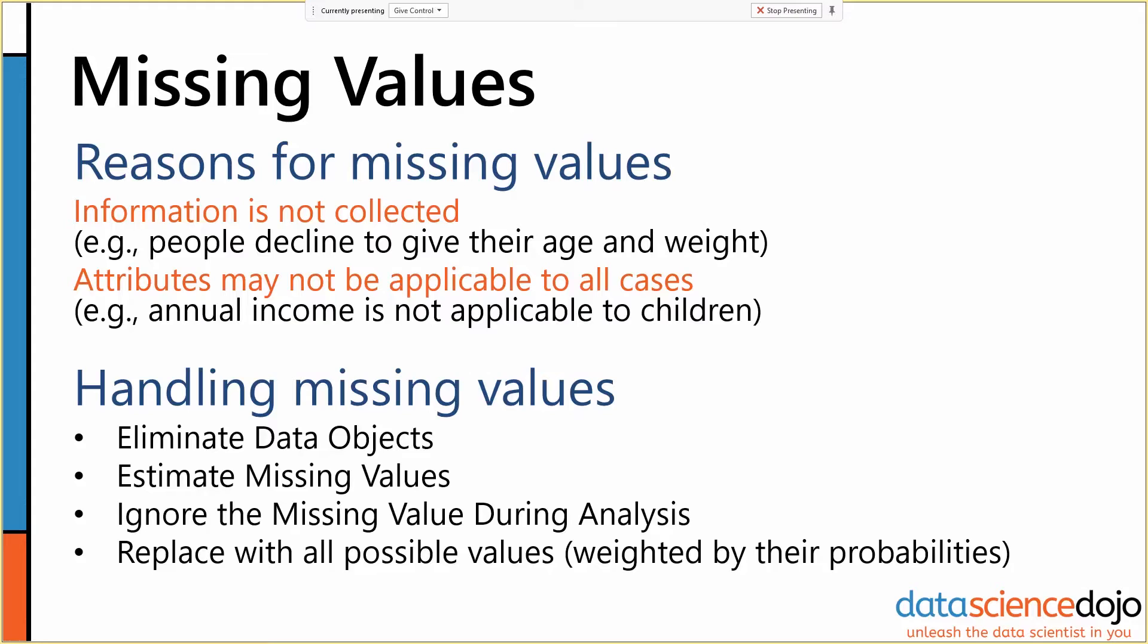Other times, the attributes you're collecting may not be applicable to all cases. If you're asking people about the annual income of each member of their household on a survey, the children in the household don't have an annual income. It doesn't make sense, so you just code that as a missing value.